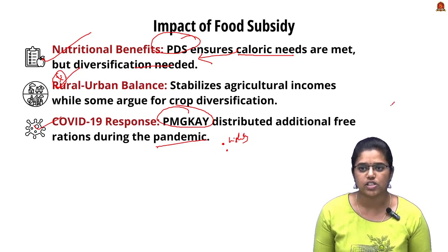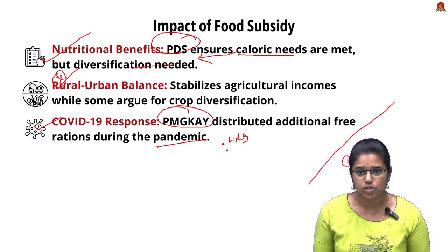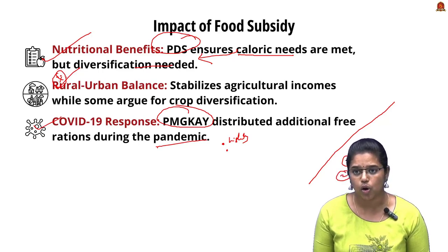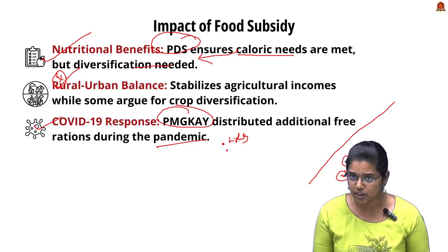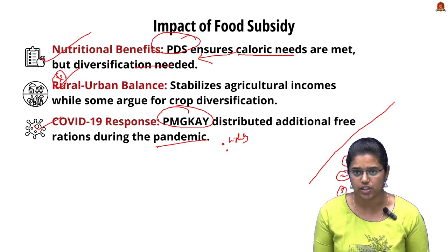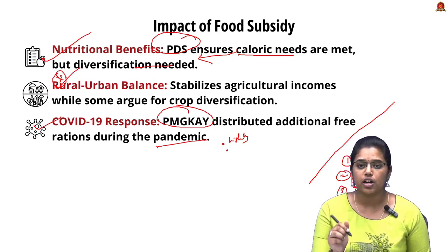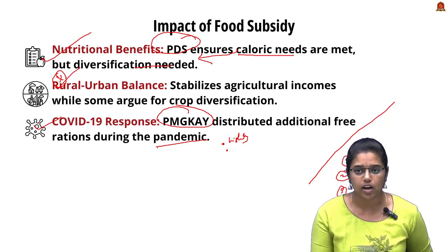To conclude the first editorial: we started with food subsidies, examined types of food subsidies, discussed agricultural subsidies, saw the difference between both, and ended with the impacts of food subsidies. Now let's move on to the next editorial.